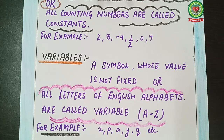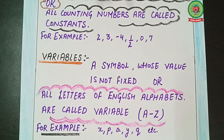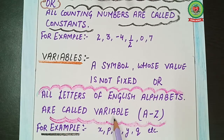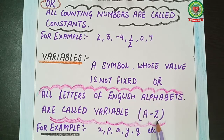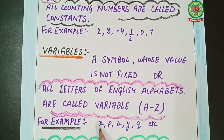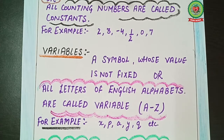Constants are those whose values are fixed. Symbols whose value is not fixed are called variables. In simple language, all letters of the English alphabet are called variables — a till z. For example: x, p, a, y, q, etc. There are so many letters in the English alphabet, so all these alphabets are known as variables.